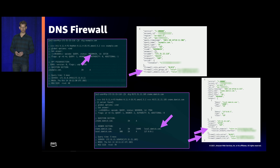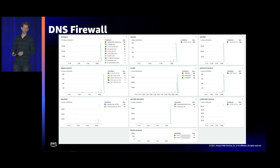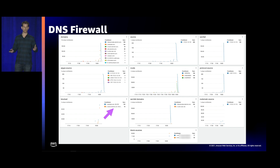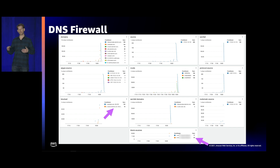The DNS Firewall metadata in the query logs shows the rule group matched, the rule, and the action taken. Back in the Contributor Insights dashboard, using the DNS Firewall sample rules, we can see the blocked domains — example.com and cname.damik.com — and track which resolver inbound endpoints are seeing the most blocks. You can dig further to see which specific inbound endpoints are getting blocked and customize these examples to suit your needs.